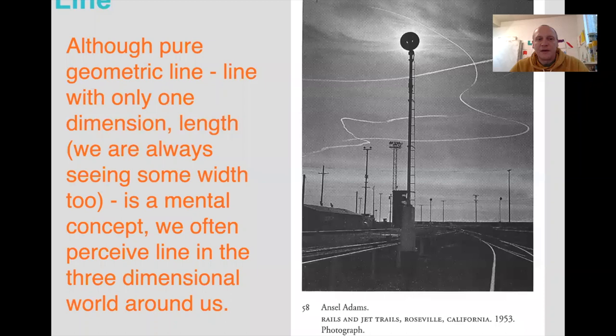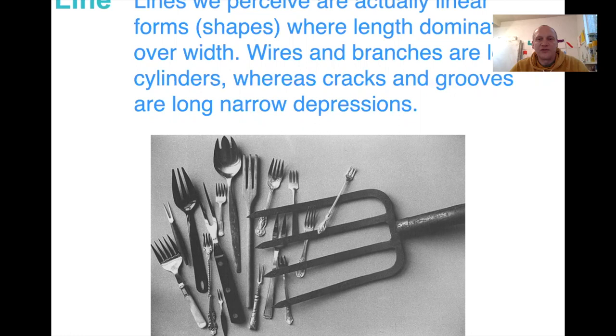A pure geometric line has only one dimension, so we can't actually see it — we're seeing a stretched-out rectangle or wider shape. So pure line is just from one point to another. These are linear forms where length dominates, like wires and branches. Cracks, grooves, and long narrow depressions are other good examples.